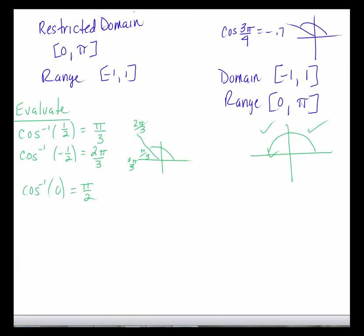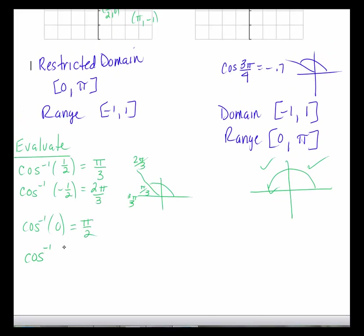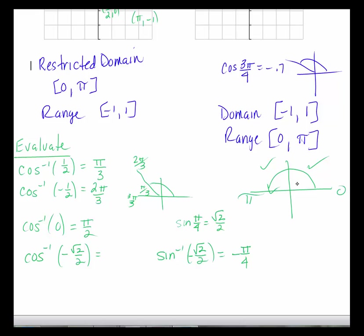Let's try the inverse cosine of negative square root of 2 over 2. For comparison, the inverse sine of negative √2/2 would be negative pi over 4, since sine of pi/4 is √2/2 and we take the negative. But for inverse cosine, the answer can never be negative — it must be an angle from 0 to pi. So I'm looking for a second-quadrant angle with reference angle pi over 4. Since pi is 4pi/4, the answer is 3pi/4.